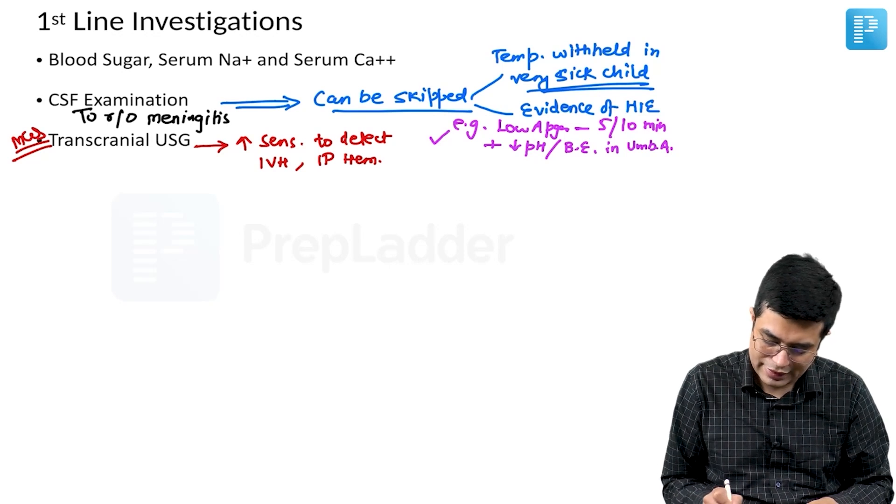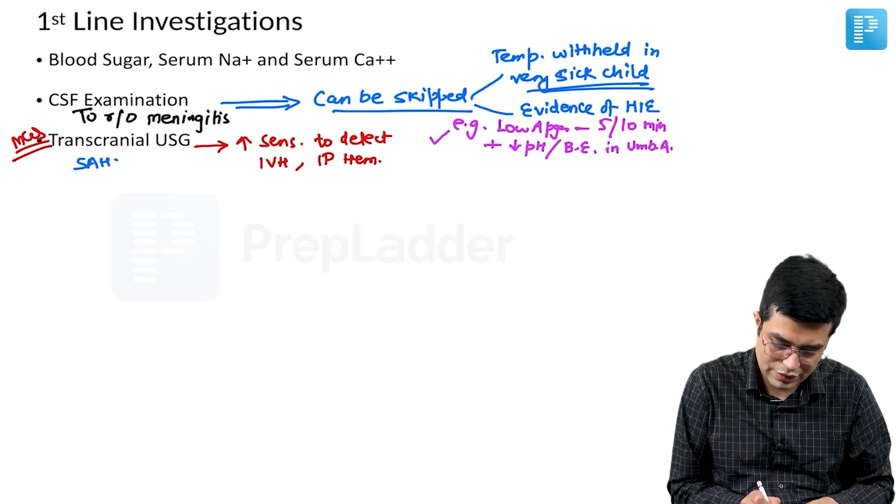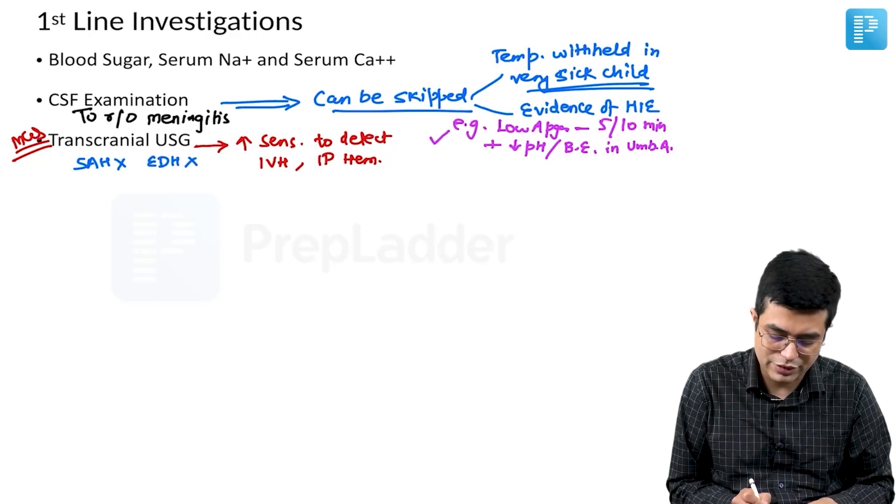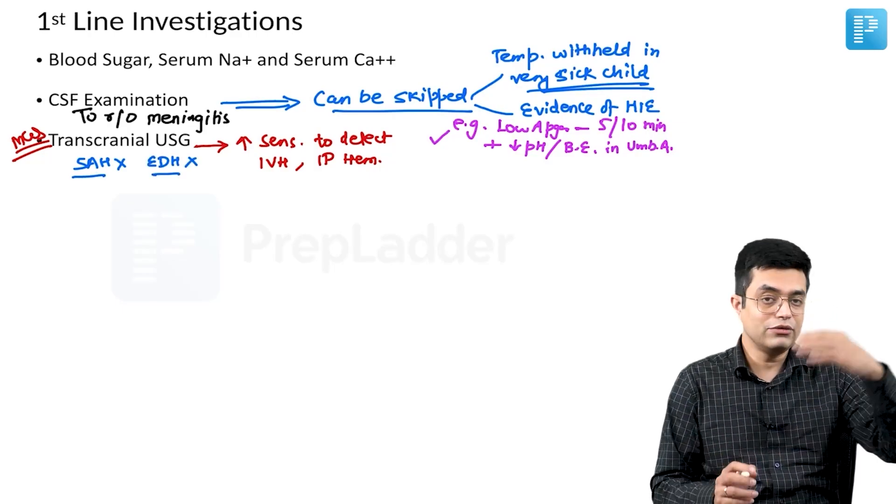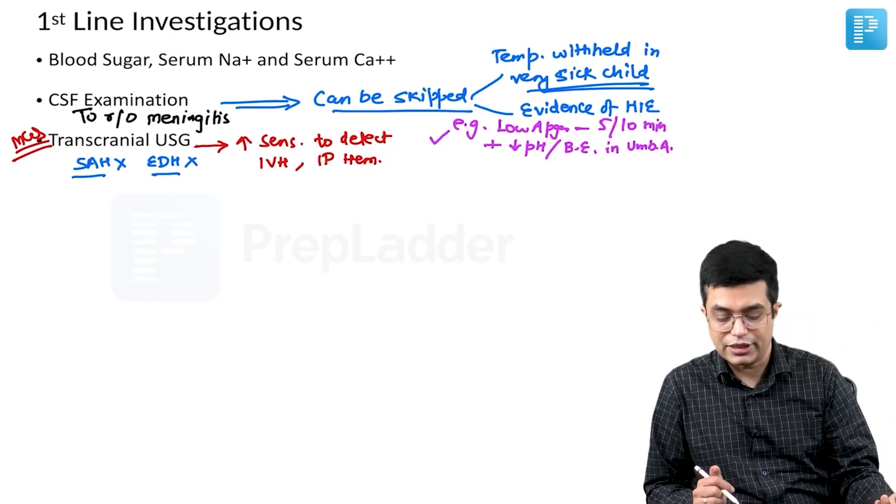But the problem is, it cannot detect subarachnoid hemorrhage, it cannot easily detect extradural hemorrhage. For that, if you are suspecting these two, then you need to go in for other investigations like CT or MRI.